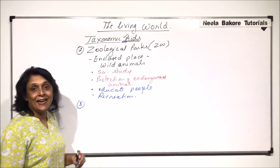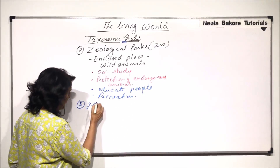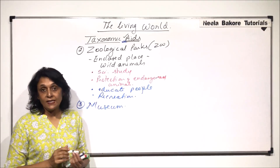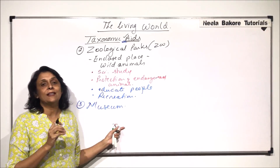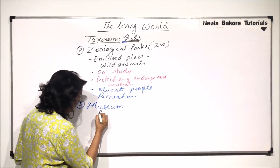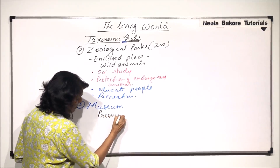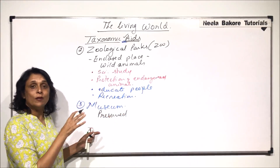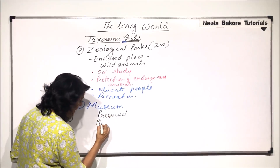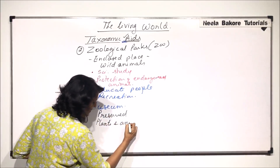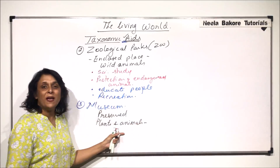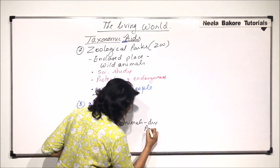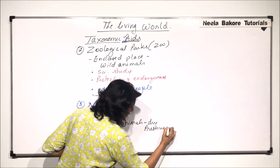The third type of taxonomic aid is a museum. It is a place where preserved plants and animals are kept. These organisms are preserved in the form of specimens — dry and preserved specimens.